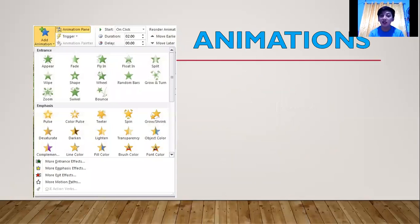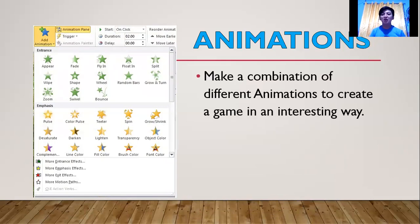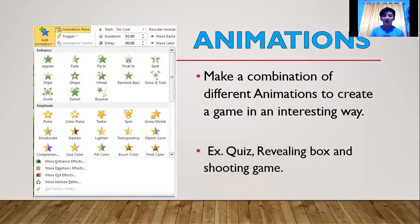In animations — which you can find in the toolbar with the star icon — you can see options for entrance, emphasis, exit, and motion path of different images, letters, and numbers. You can make a combination of different animations to create games in an interesting way. For example, you can make a quiz, a revealing box type of game, a shooting game, and many more. You just need to explore and be creative.